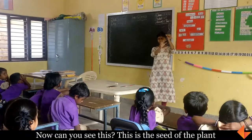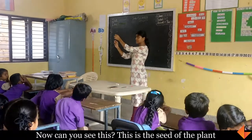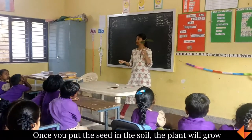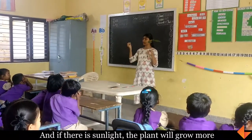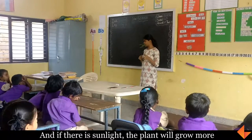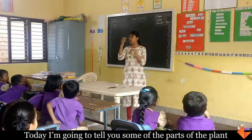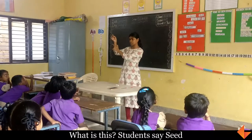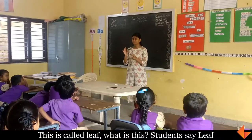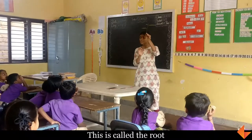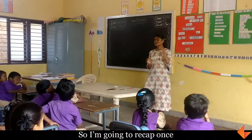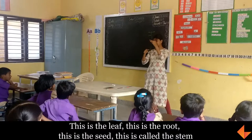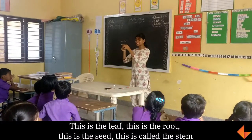Can you see this? This is the seed of the plant. Once you put the seed in the soil, the plant actually grows. And if there is sunlight, the plant will grow more. Today I am going to tell you some of the parts of the plant. This is called the leaf. This is called the root. This is the seed. This is called the stem.